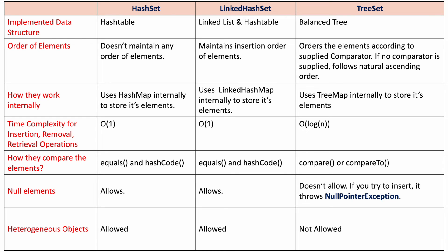Regarding heterogeneous objects: collections allow different types of data. HashSet and LinkedHashSet allow heterogeneous data if generics are not specified. However, TreeSet does not allow heterogeneous data — it requires homogeneous data only because it internally uses sorting. When comparing objects of different types it causes a ClassCastException. So HashSet and LinkedHashSet allow heterogeneous objects, but TreeSet does not. These are the main differences between HashSet, LinkedHashSet, and TreeSet.